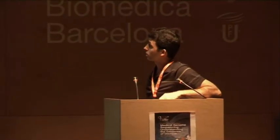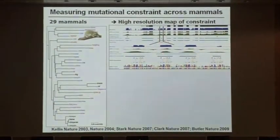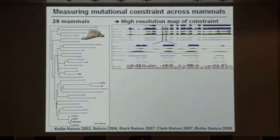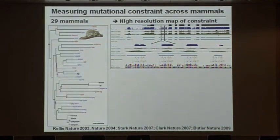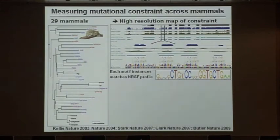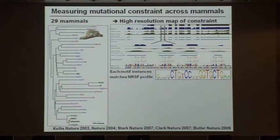We've sequenced 29 mammals at the Broad Institute, which we've used to increase the resolution with which we can map constraints across mammalian species. In this particular case, there's an intronic region of a very well-studied gene associated with four little peaks of conservation. When we look at a binding study with ChIP-chip, we find that all of these regions are occupied by the factor. In fact, the four motif instances of NRSF associated with factor binding are each specifically conserved in regions corresponding to those four peaks of conservation.